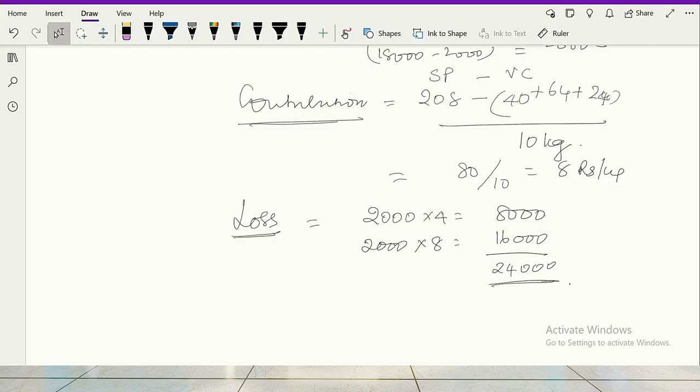I again calculated, but you could have done it in working note 1 contribution. You do it step by step. Every step will carry marks. So contribution is 80 rupees. And one unit, 10 kgs, 8 rupees per kg.